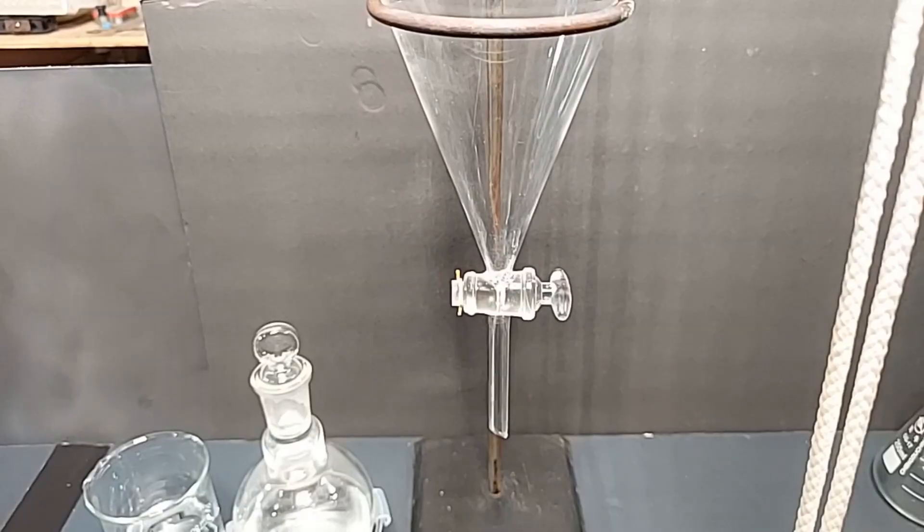I have the separatory funnel set up here for the next series of washes to clean up our ethyl acetate. I took a minute to set this up, so the ethyl acetate was actually put in the freezer for a bit while I did this and broke down the previous setup. So it's kind of chilly. The first wash is going to be cold water, 100 milliliters of it.